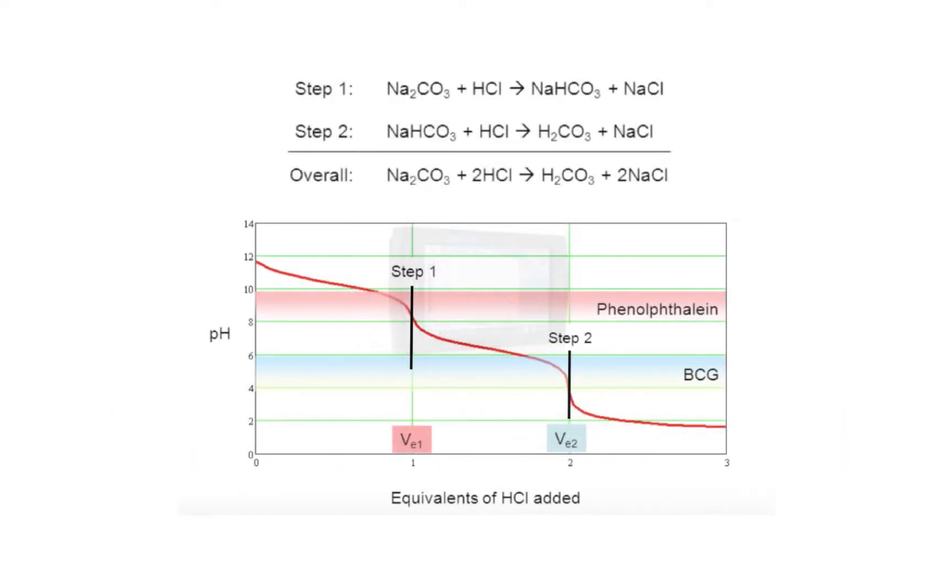Unknown B is an impure sample of sodium carbonate. You will be calculating the percent sodium carbonate in your assigned sample.